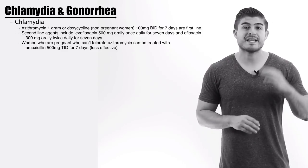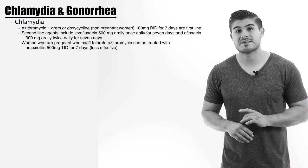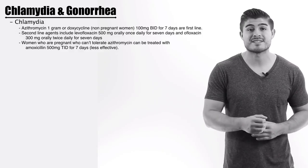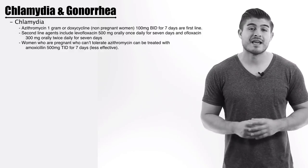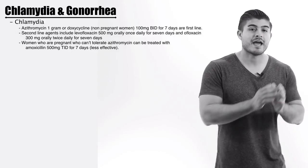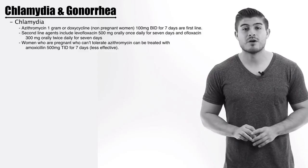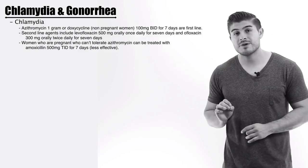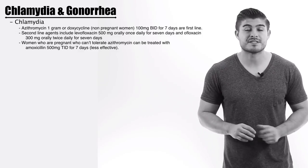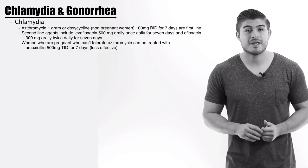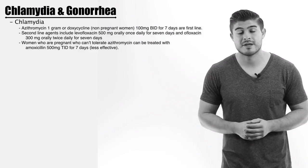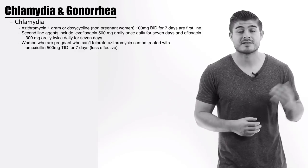Alternatives are levofloxacin 500 milligrams once a day for seven days, and ofloxacin 300 milligrams twice a day for seven days. The benefit of levofloxacin is that if a patient presents with dysuria and frequency and you're not sure if it's Chlamydia or a UTI, levofloxacin can target both simultaneously. This is considered second-line; first-line remains azithromycin.